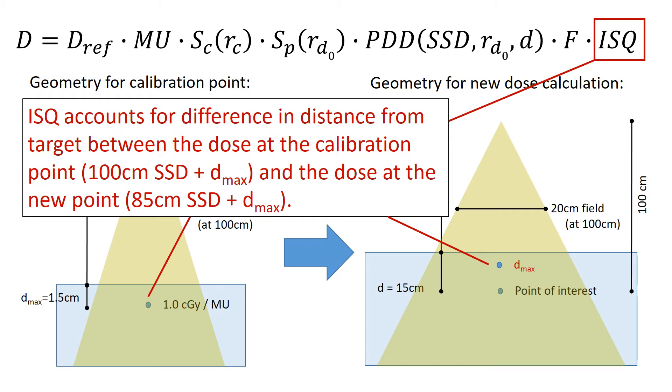Right? So we start at D max, and then the PDD calculates dose below that at a specific depth. So for us, that's going to be that new normalization point is going to be 85 cm plus D max, or 86.5. So that's what inverse square correction is going to do.